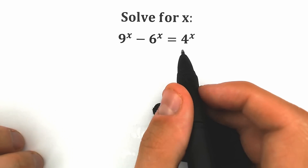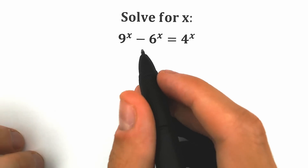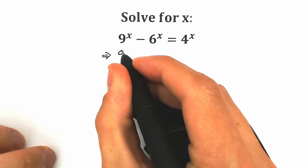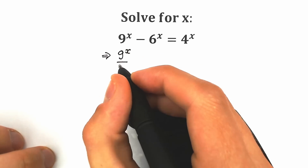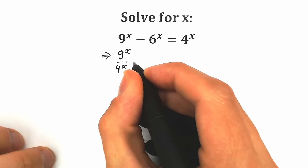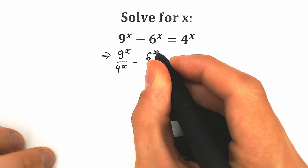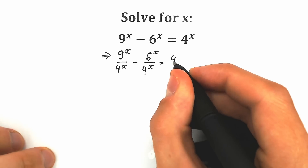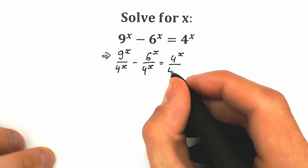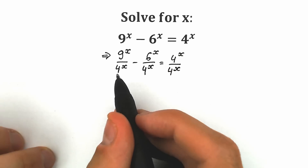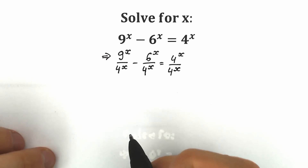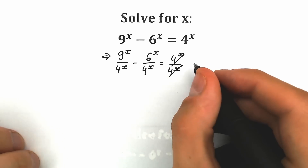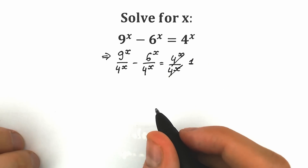The first trick is to divide both sides by 4 to the power x. So we have 9 to the x divided by 4 to the x, minus 6 to the x divided by 4 to the x, equal to 4 to the x divided by 4 to the x. This changes nothing because we divide all parts by 4 to the power x. We can easily cancel the 4 to the x on the right side, so we have only 1 on the right side, which is really great.